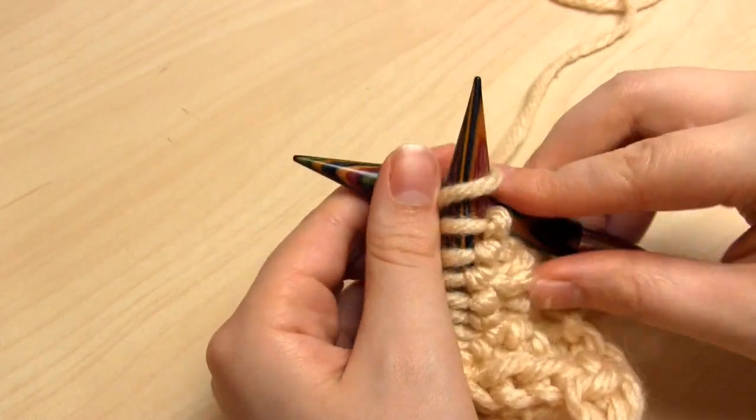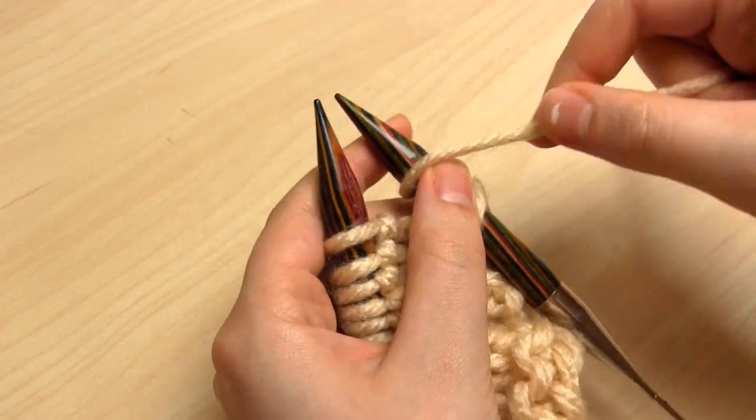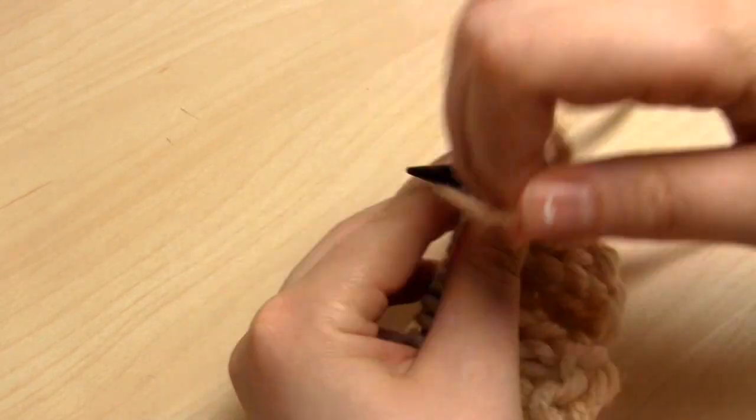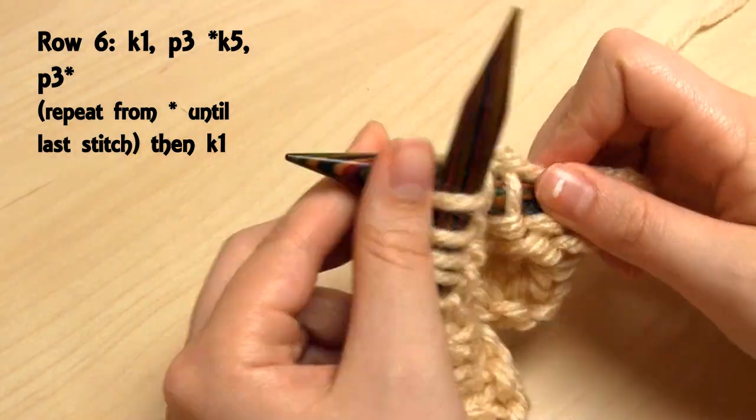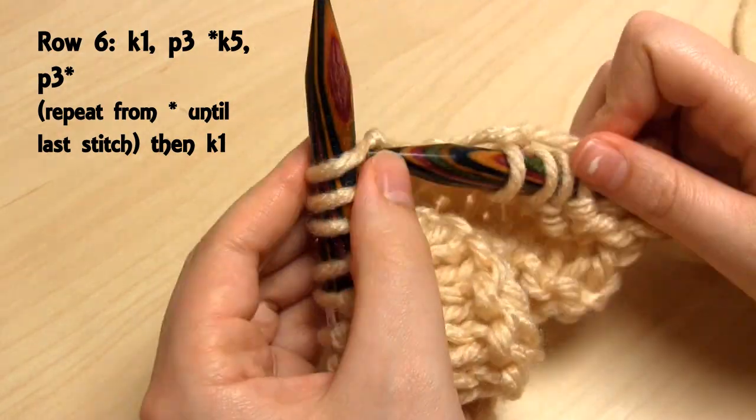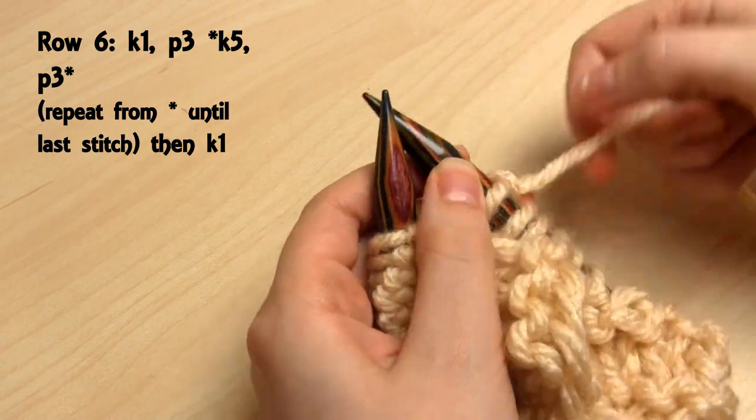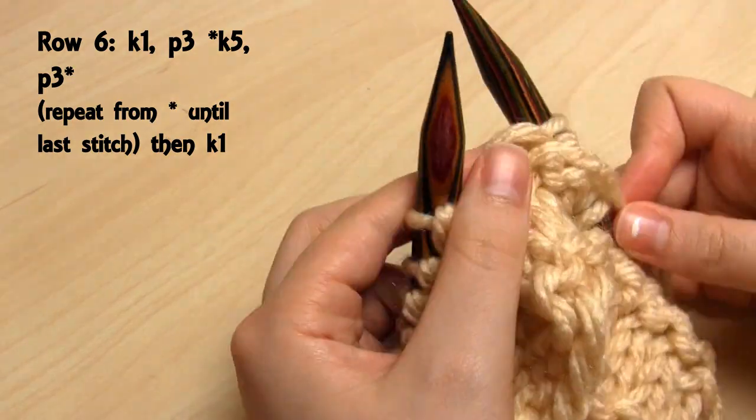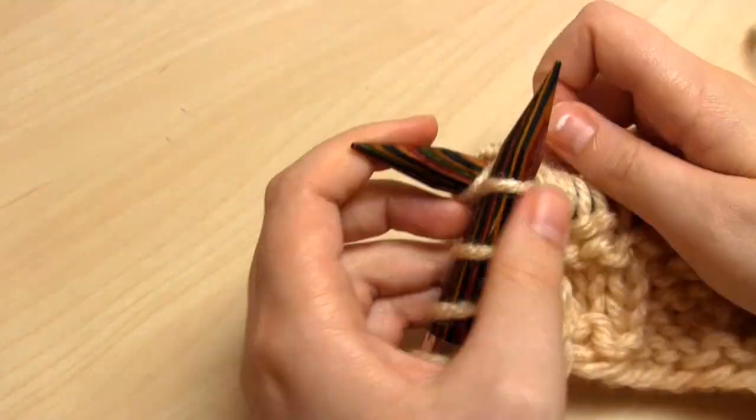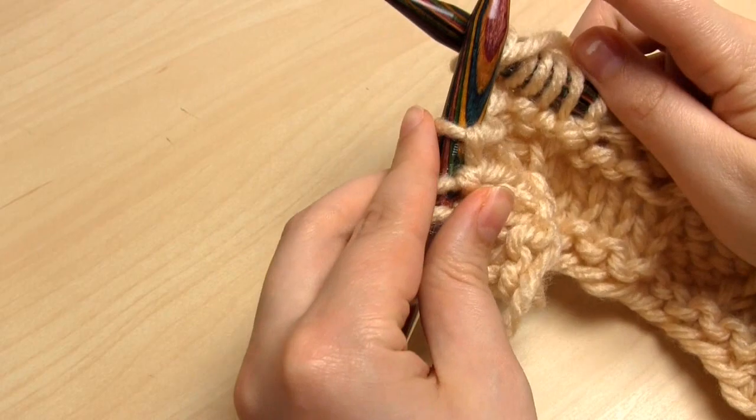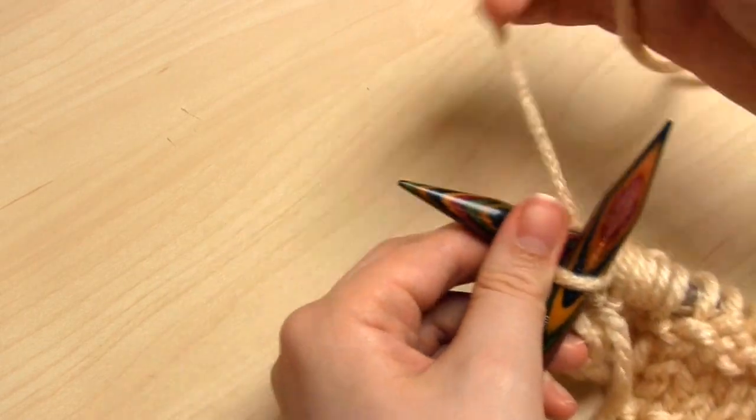And now we're on to row 6. So for the first stitch and also the last stitch on this row, you're going to knit one. So to start, you just knit one stitch. Then take the yarn to the front and do 3 purl stitches. Yarn to the back and then do 5 knit stitches. And then you do 3 purl stitches, 5 knit stitches, 3 purl stitches, 5 knit stitches, until you are 1 stitch away from the end of the row. And then you will do 1 knit stitch to finish. So row 6, you knit one, and then you repeat 3 purls, 5 knits, over and over until the last stitch, which you just knit.